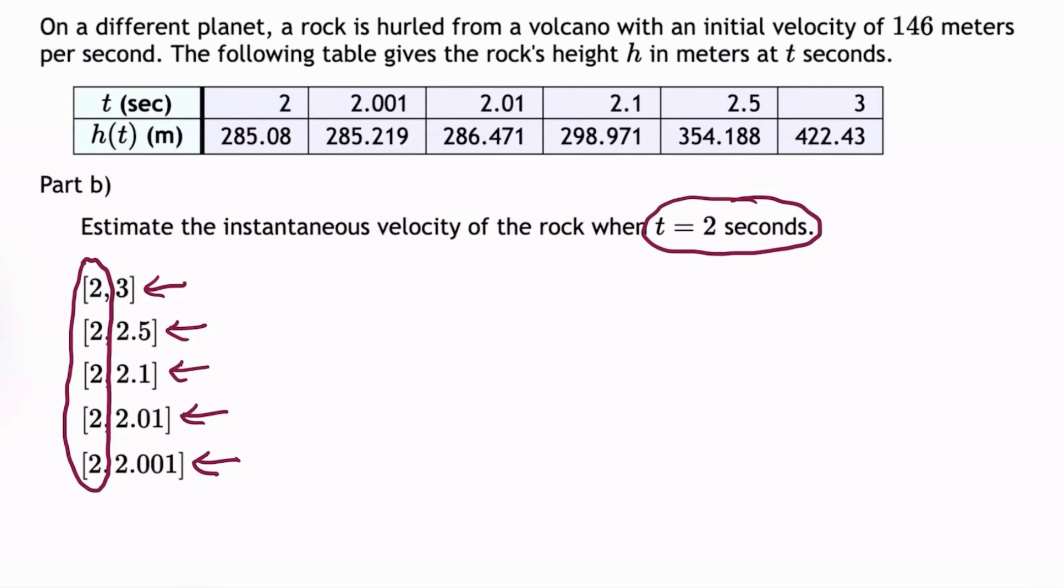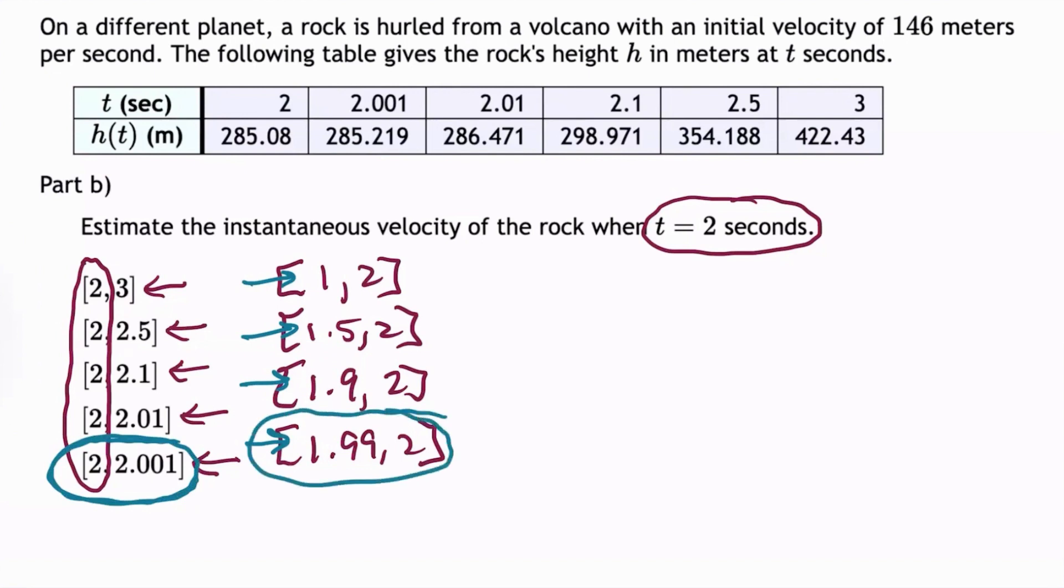But in previous problems, we also had intervals such as 1, 2, and 1.5, 2, and 1.9, 2, and 1.99, 2, etc., where the left boundaries are all less than 2, but getting closer and closer to 2, in which case we would say that the left boundaries are approaching 2 from the left. Then we would take the average velocity from the smallest interval when approaching 2 from the right, and the average velocity from the smallest interval when approaching 2 from the left. And we would average those 2 average velocities to estimate the instantaneous velocity.